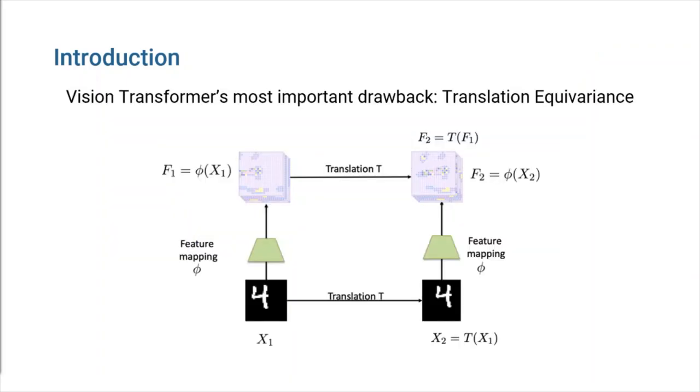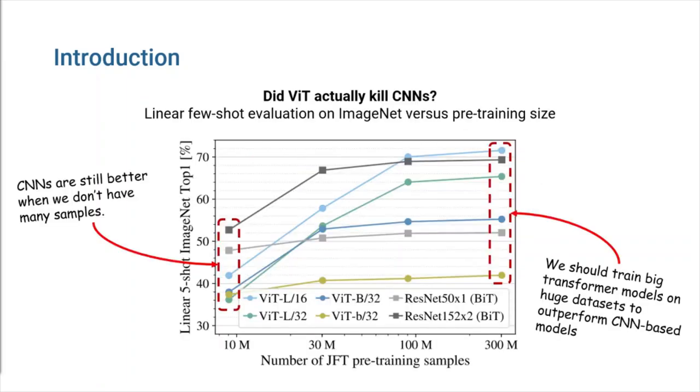One of the main limitations of vision transformer was the lack of translation equivariance property. When an image is shifted a little bit to the right, the model will have trouble identifying it. Thus, in order to outperform CNNs, vision transformer had to be trained on huge datasets of hundreds of millions of images.